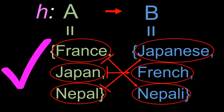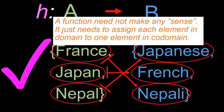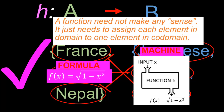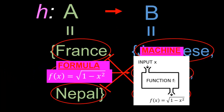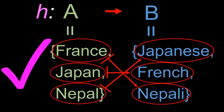To qualify as a function, h need not make any sense at all. So long as h satisfies the requirement of mapping each element in the domain to exactly one element in the co-domain, then we call it a function — it does not need to make any sense whatsoever. If we persist in thinking of functions as formulas or machines, we are led to suggest that h is somehow not a proper function. But this is incorrect. h is a completely proper function, and it is indeed a function because it maps each element in the domain to some single element in the co-domain.